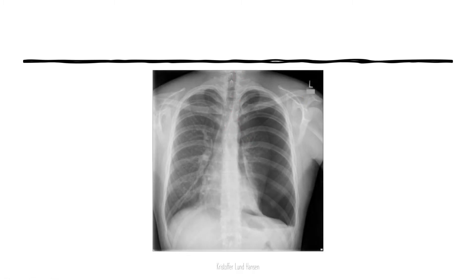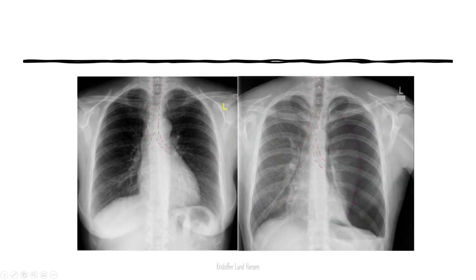If the trachea or bronchi is misplaced, try to see if you can find the cause. In this case, it is due to a pneumothorax that is pushing the lungs towards the right, which also pushes the trachea and bronchi more towards the right. Other causes of misplacement could be a mass, like a cancer in the mediastinum, pushing directly on the trachea. On the comparison image, you can clearly see the trachea is misplaced towards the right of the chest.